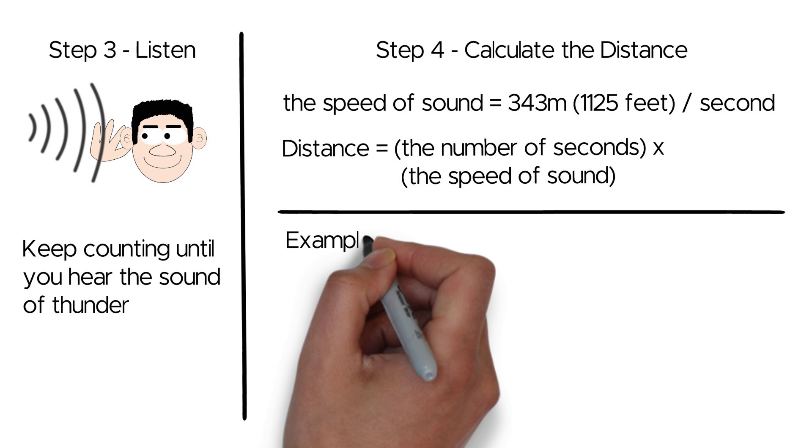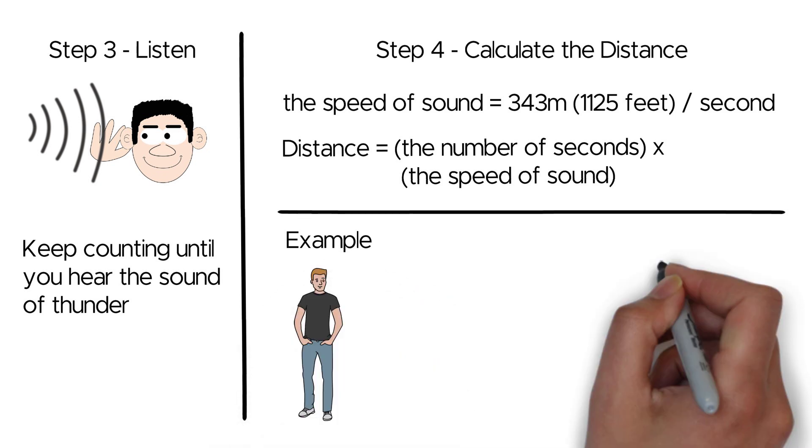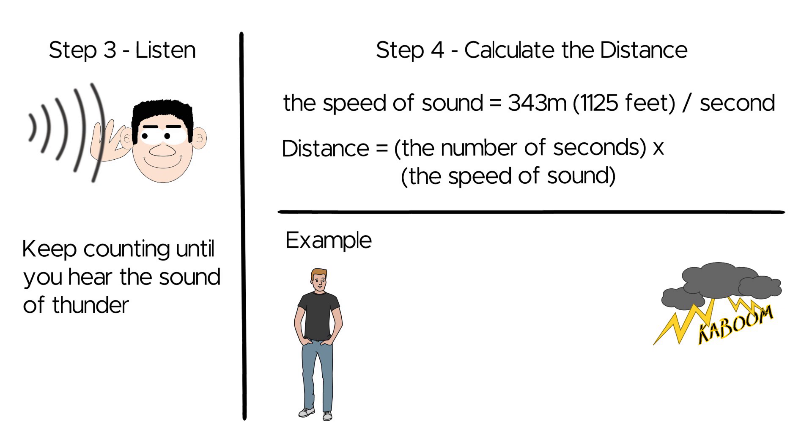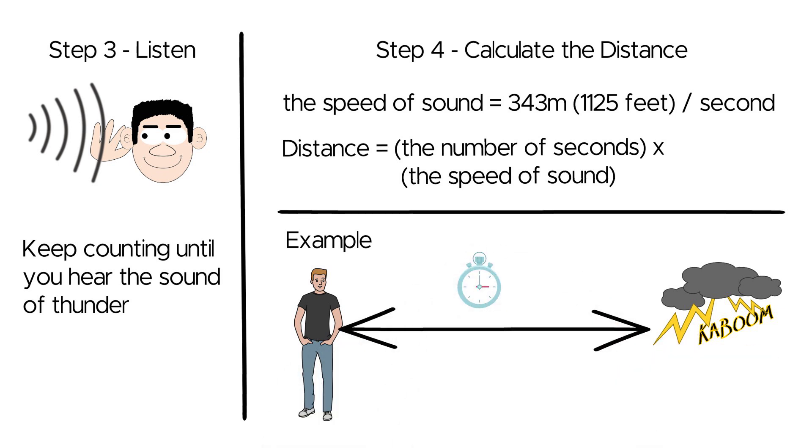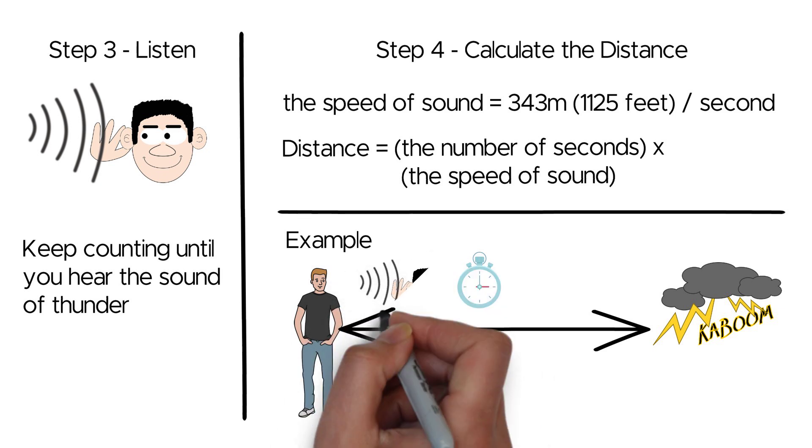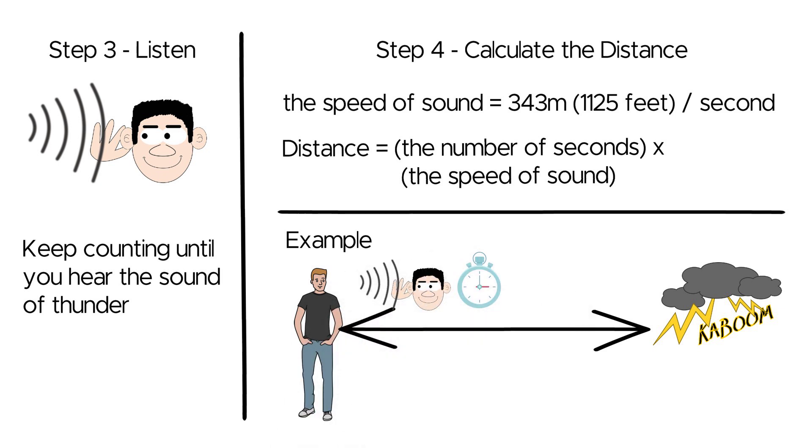For instance, you're outside enjoying a sunny day when suddenly you see a flash of lightning. You immediately start counting seconds. You count 1 second, 2 seconds, 3 seconds, until you hear the thunder. You count a total of 10 seconds before you hear the thunder.